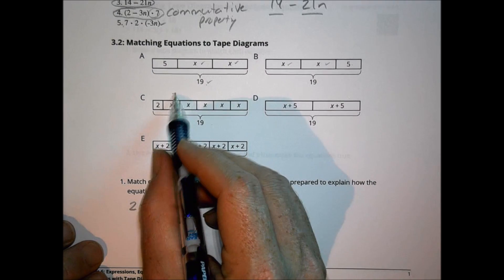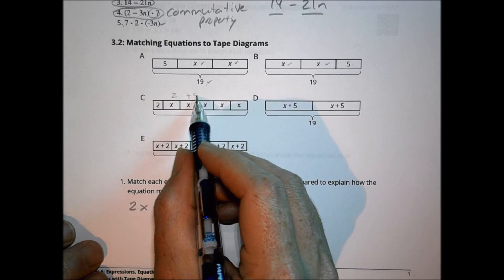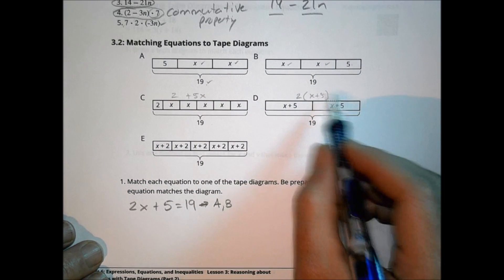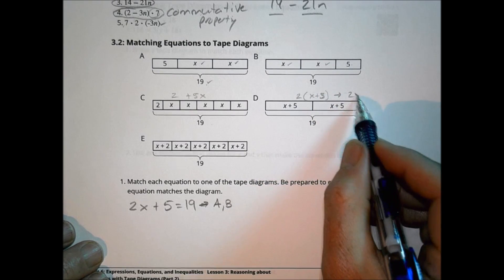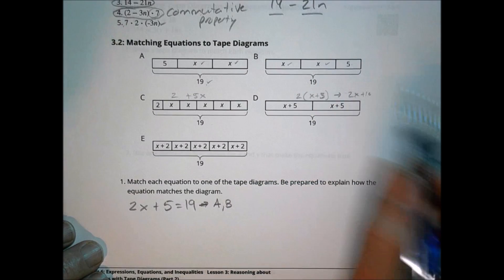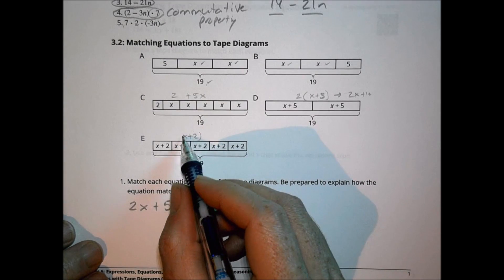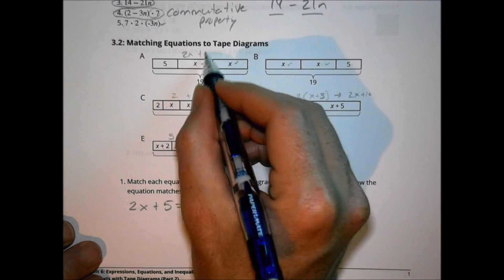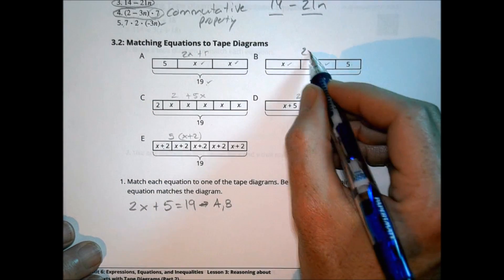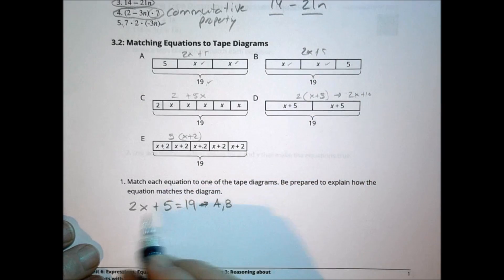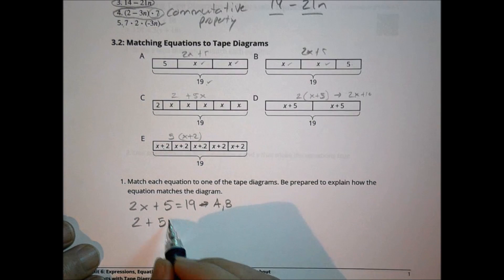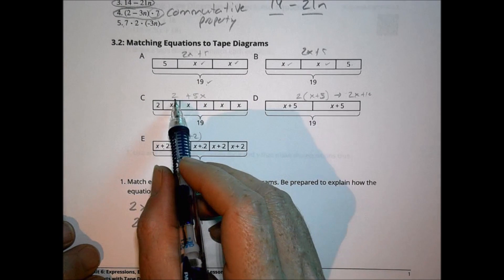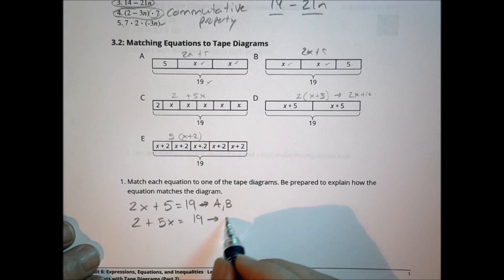One diagram has a 2 and five x's, which is a little different. Another has two groups of x plus 5, which if multiplied out becomes 2x plus 10. The second equation is 2 plus 5x equals 19. That matches choice C, which shows a 2 and five x's. So we say C for that one.